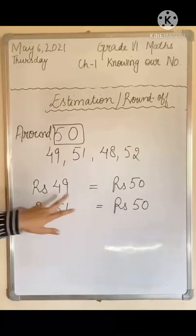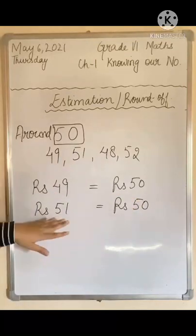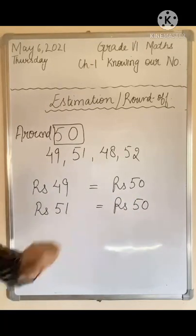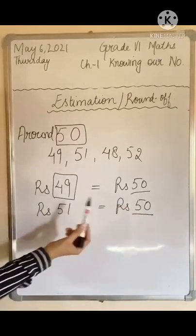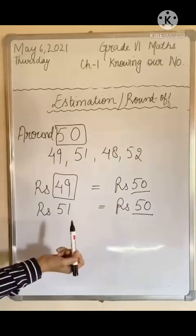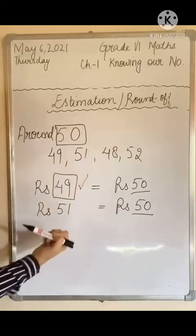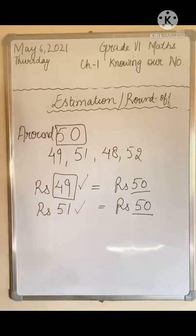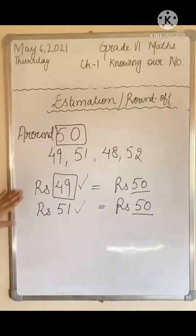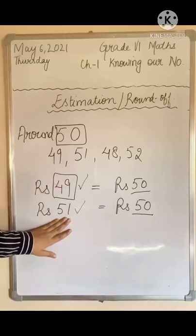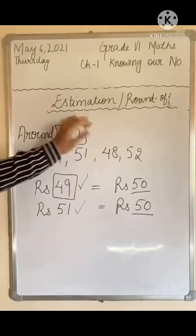Sometimes it can also be the case that the product you bought was listed at Rs. 51. But since you do not have change of Rs. 1, you gave the shopkeeper Rs. 50. So instead of 49 you gave 50, instead of 51 you again gave 50. The actual price can be a little less than 50 or a little more than 50. This general idea of rounding numbers is called estimations.